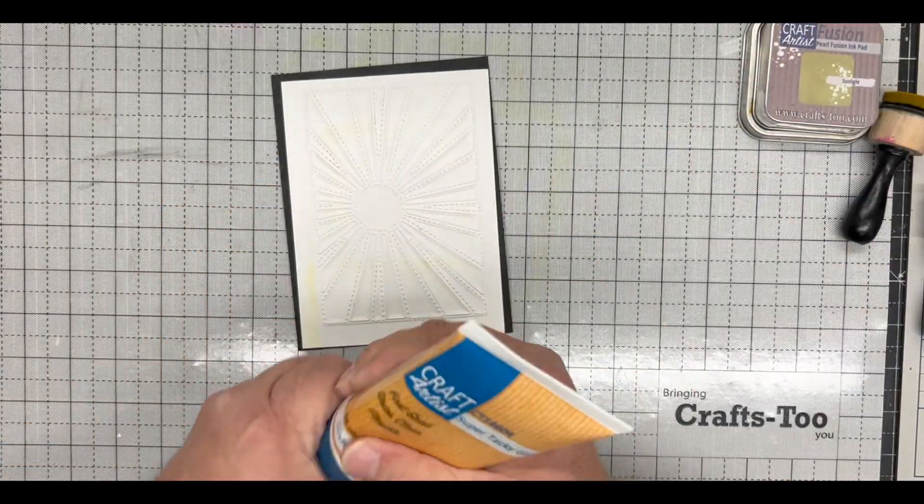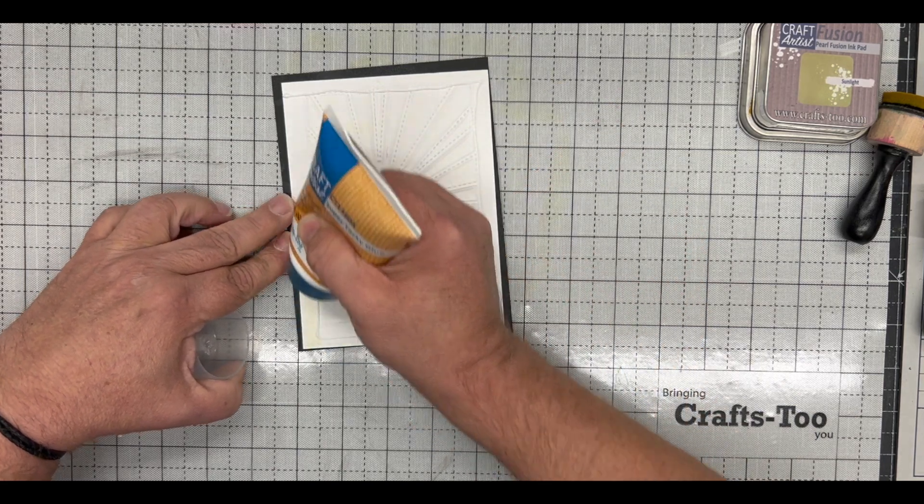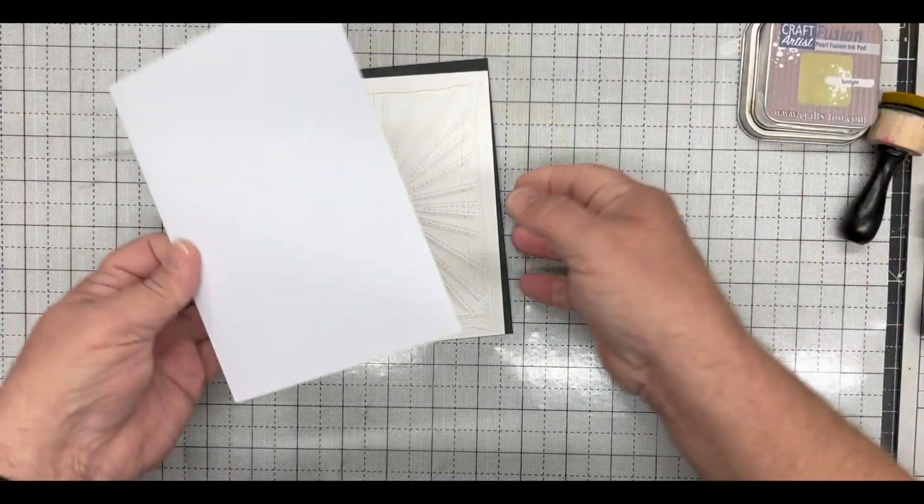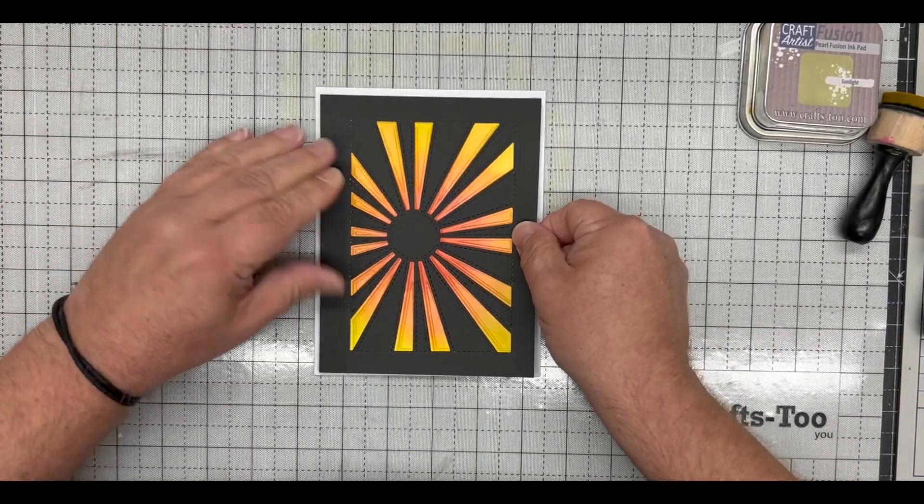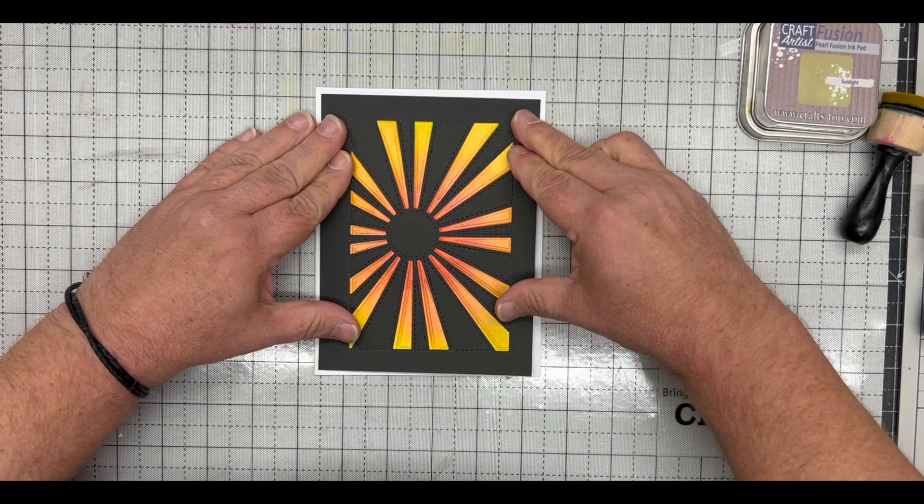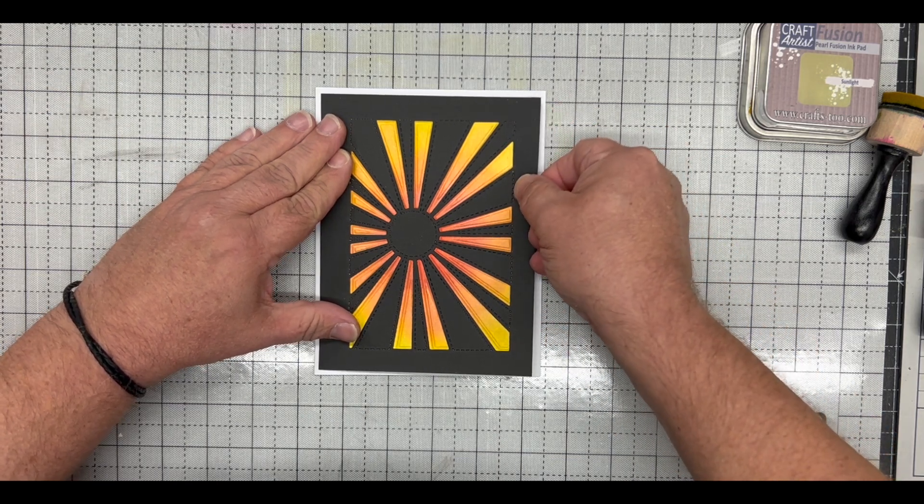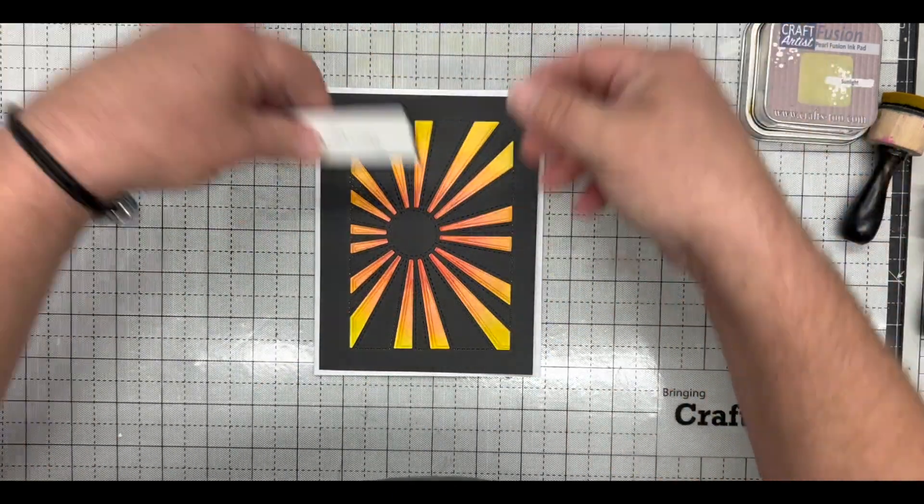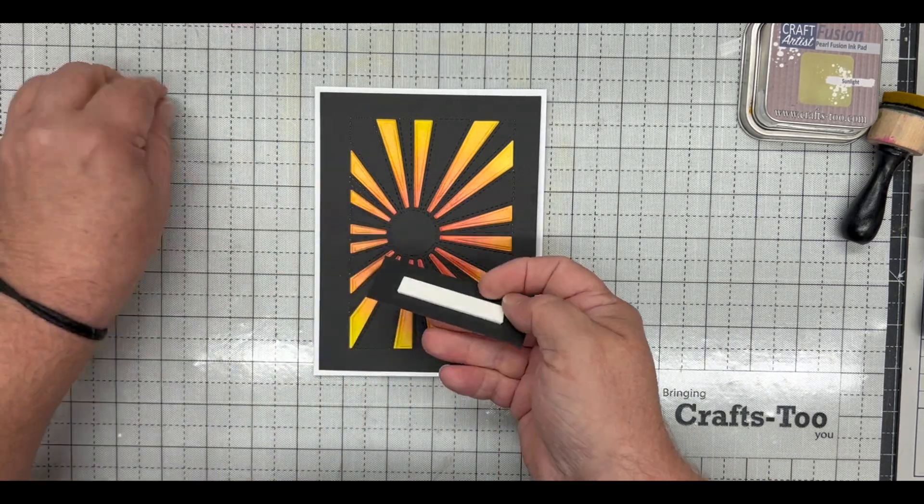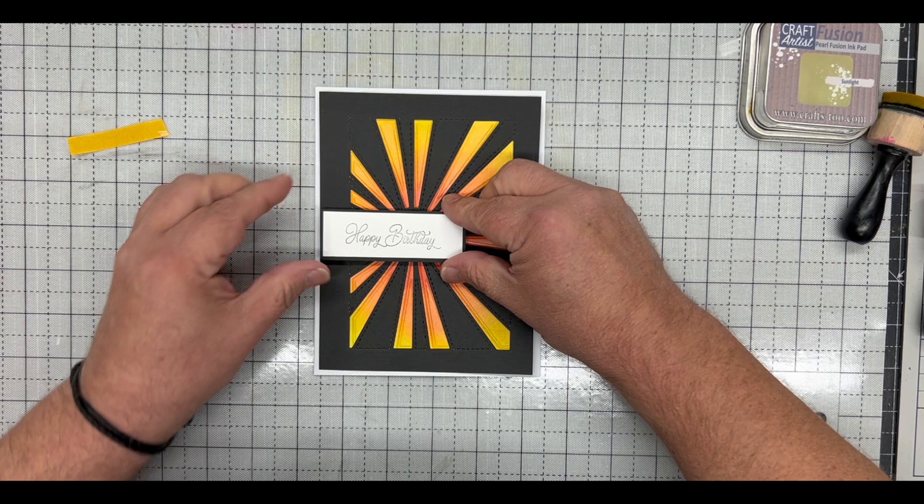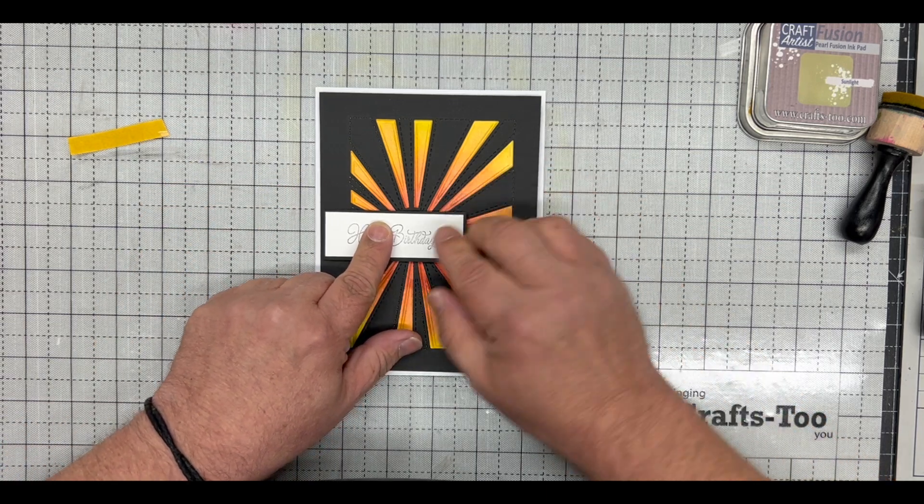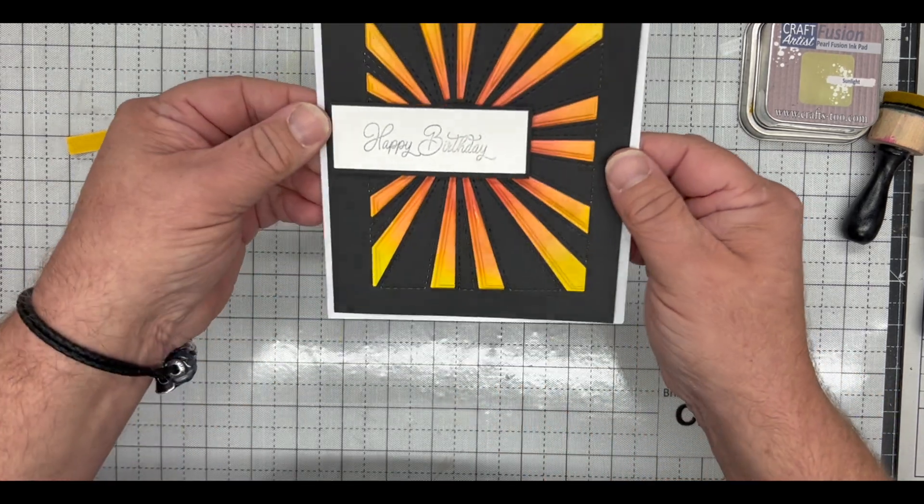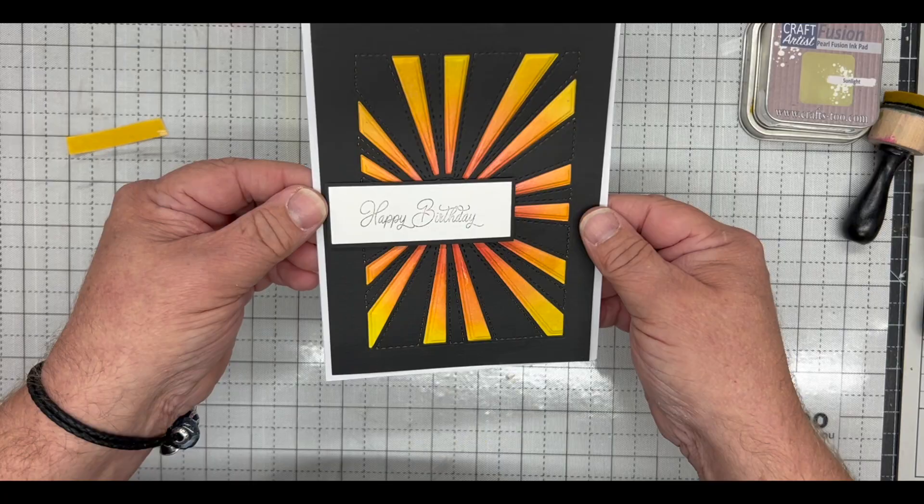I'm simply then going to add a little bit of glue onto the back using the Craft Artist super tacky glue and onto a card blank. This has been cut to six and a half by five to fit exactly. I'm going to glue that down, and then I've got a little sentiment that I've cut using a nice little happy birthday. And there we go, a nice simple quilted card that looks like a sun ray.